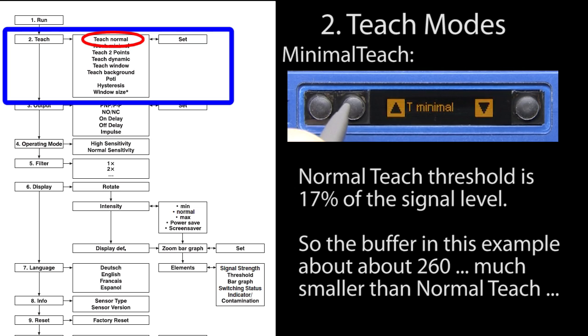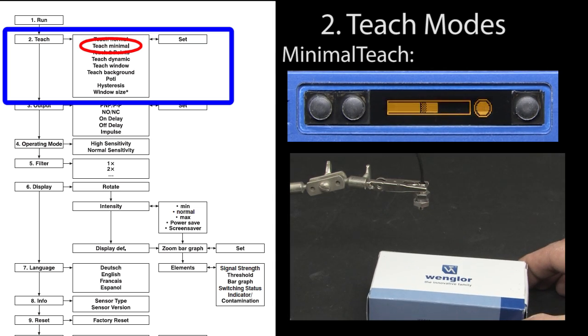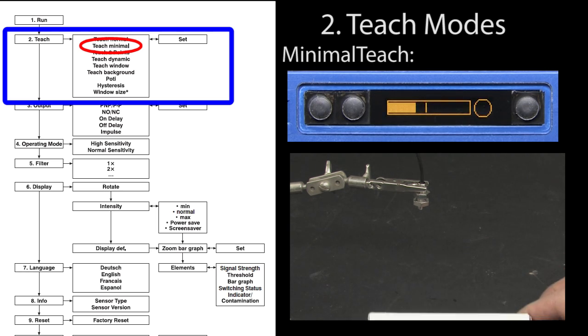Hit the enter button to exit, arrow up and hit enter to go back to run. Sure enough, the sensor detects objects down to the upper 400s. Exactly what we expect.